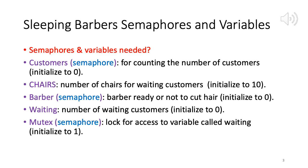Now on slide number three, we look at the semaphores and variables needed. We have one barber process and many customer processes that need to be synchronized. The chain of events: initially barber is sleeping, first customer arrives, perhaps sits in a chair briefly, wakes the barber, gets their haircut. Meanwhile other customers arrive and sit in waiting chairs. Once the first haircut is done the barber calls the next customer, and so on. If all waiting chairs are full and another customer comes, they simply leave.